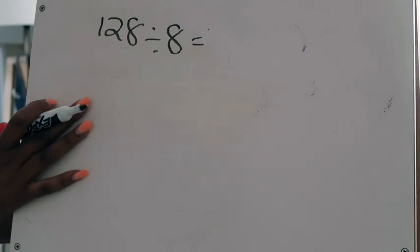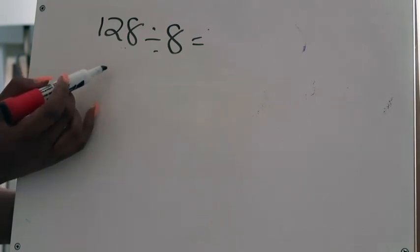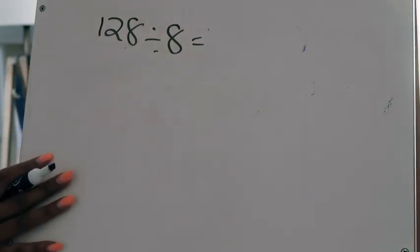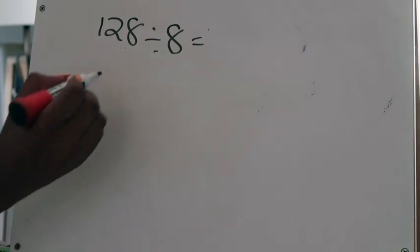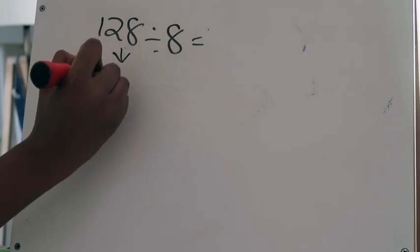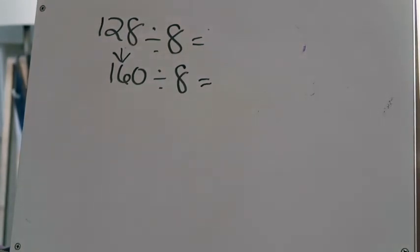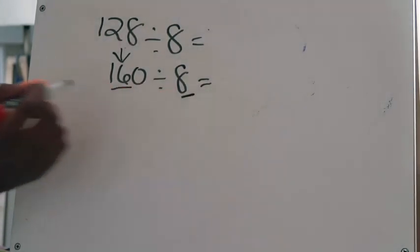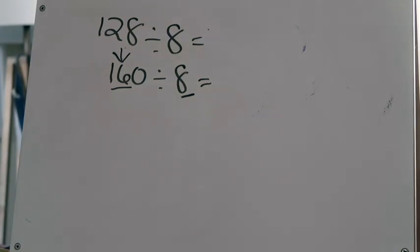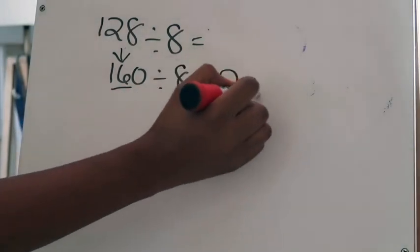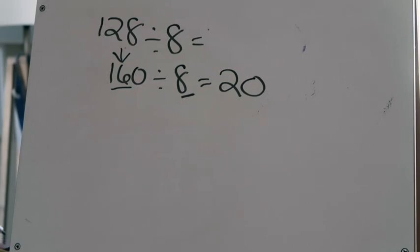Looking at the original problem 128 divided by 8, I'm going to ask myself: what can I change the dividend to so that it's compatible — easily divisible by 8 — but still relatively close to the original number? I'm going to change 128 to 160. My new problem becomes 160 divided by 8. I created the basic fact 16 divided by 8 equals 2, and using powers of 10, I add that zero to get an estimated answer of 20.